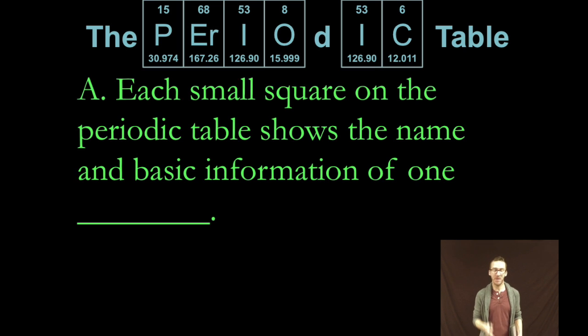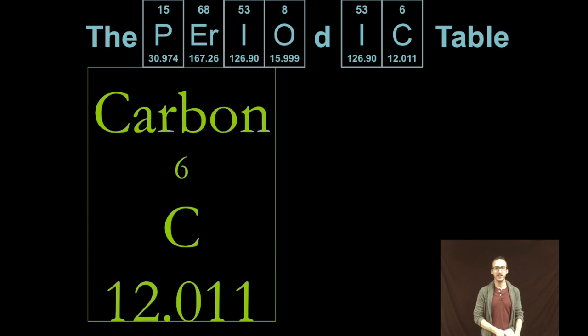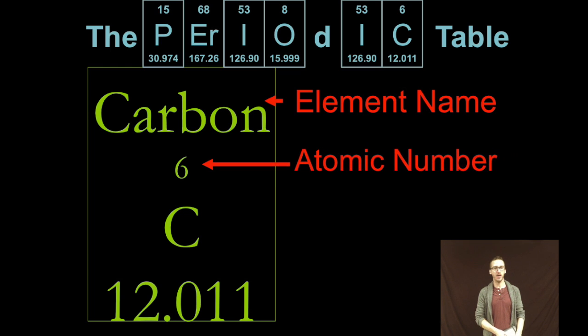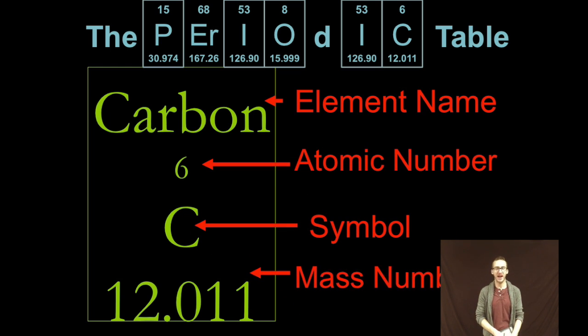Now a couple quick notes about the periodic table. Each small square on the periodic table shows the name and basic information of a single element. Let's take a quick look at carbon one of my favorite elements. You're going to get things like element name, atomic number, element symbol, and of course the mass number.